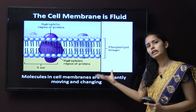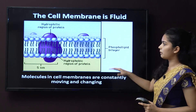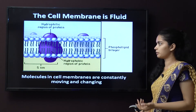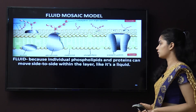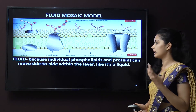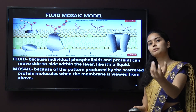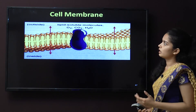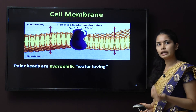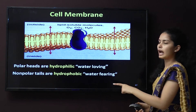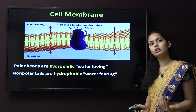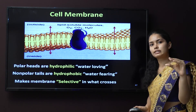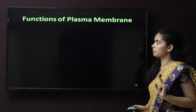The fluid mosaic model: it is called fluid because individual phospholipids and proteins can move from side to side like a liquid. It is called mosaic because of the arrangement of proteins embedded within the bilayer. The polar heads of the phospholipids are hydrophilic — water-loving — while the non-polar tails are hydrophobic — water-fearing — and are present inside the bilayer. This makes the membrane selectively semi-permeable, selecting what passes through the whole membrane.